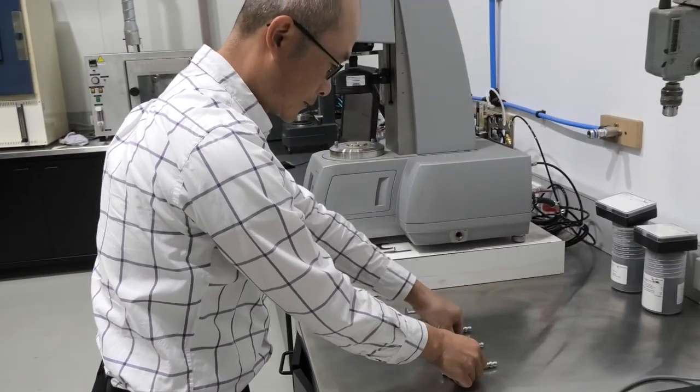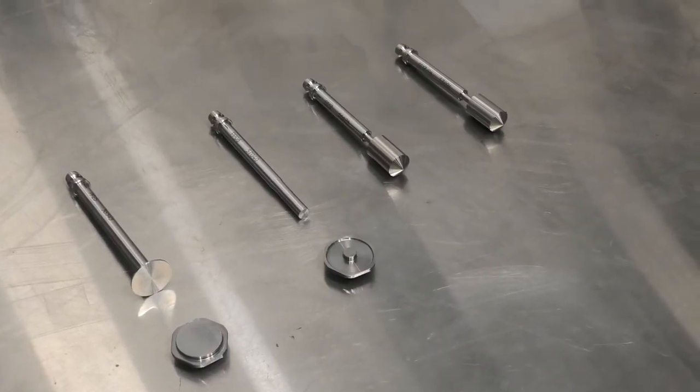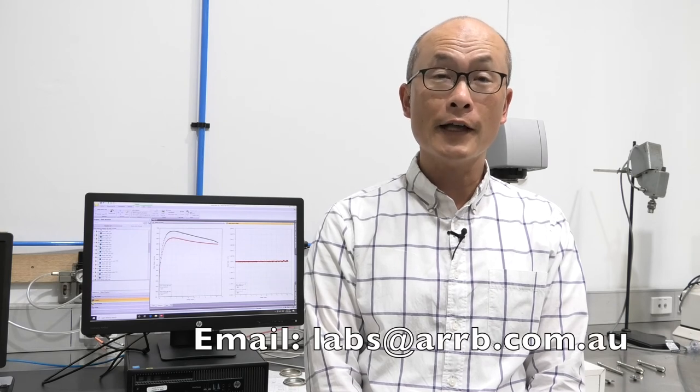Research work is currently in progress to investigate various test modes of the DSR to find the most appropriate procedure to replace the elastometer rutting test. Thank you for your interest in our research. If you would like to know more, please get in touch at ARP.com.au.